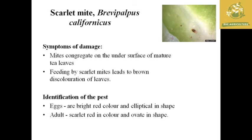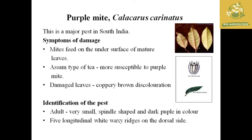The scarlet mite congregates on the underside of mature leaves, feeding and causing brown discoloration. The eggs are red and elliptical in shape, and the adult is scarlet red in color with an ovoid shape.